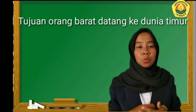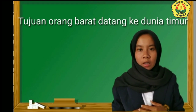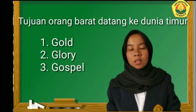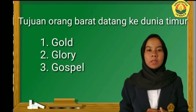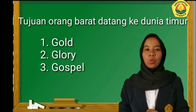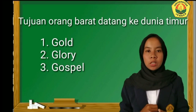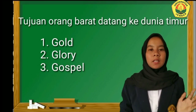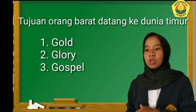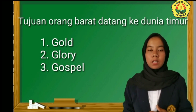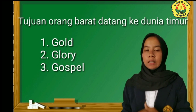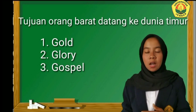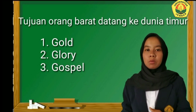Apa tujuan dari orang-orang Eropa atau orang-orang Barat datang ke dunia timur? Yang pertama dia mencari Gold, yaitu mencari kekayaan atau keuntungan dari rempah-rempah. Kemudian yang kedua ada Glory, yaitu kekuasaan — orang-orang Barat datang ke sini untuk mencari kekuasaan dengan cara menduduki wilayah Nusantara. Kemudian yang ketiga ada Gospel, yaitu dia juga menyebarkan agama yang dia anut untuk disebarkan ke Nusantara ini.